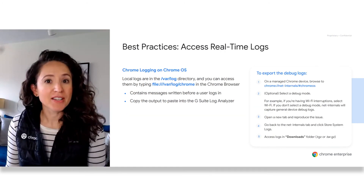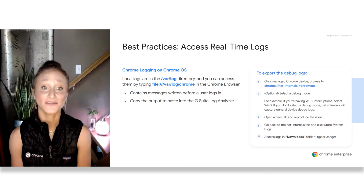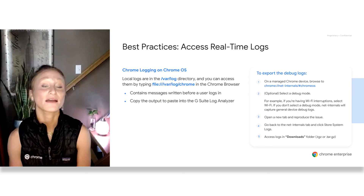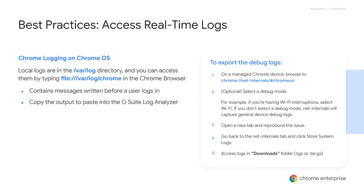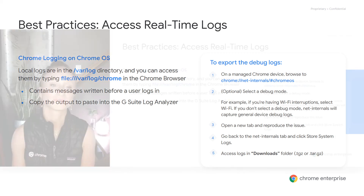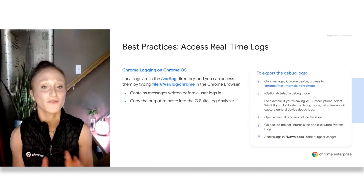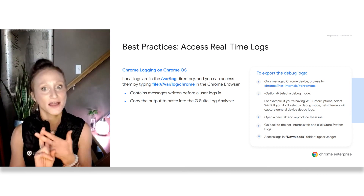Chrome logs can be collected a few ways depending on the type of issue and setup. If you experience TCP or IP problems with the Chrome browser or managed Chrome device, you can collect network logs or view network data using net export and net-internals. The net logs are useful if you need to debug network problems, analyze performance, or contact support about a problem. You can grab network logs on the device by visiting chrome://net-internals. In the browser, you can also type in file:///var/log/chrome to access real-time logs on the device that are stored locally. These logs can be found in the My Files downloads folder. Lastly, you can capture system logs by going to chrome://net-internals/#chromeos.